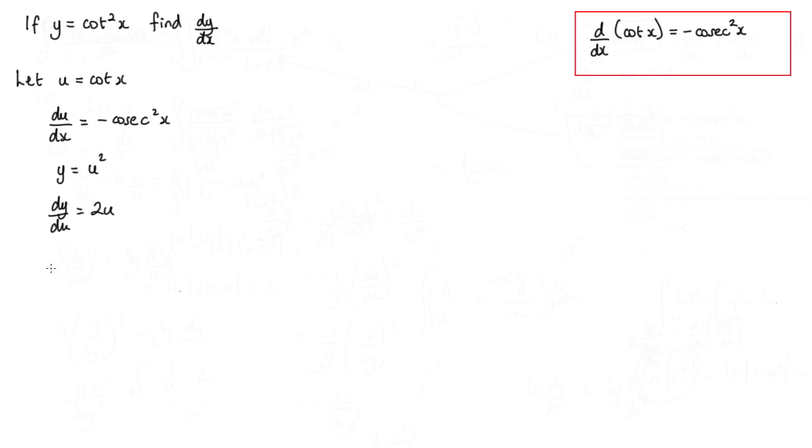Now we're trying to find dy by dx. We can use the chain rule here. So dy by dx is equal to dy by du multiplied by du by dx.